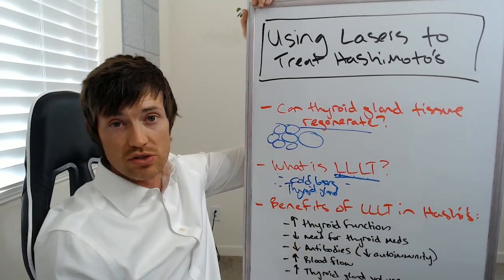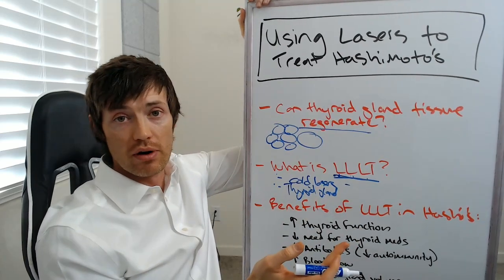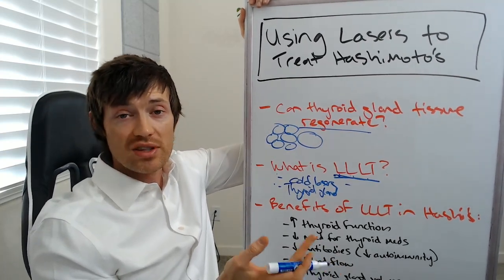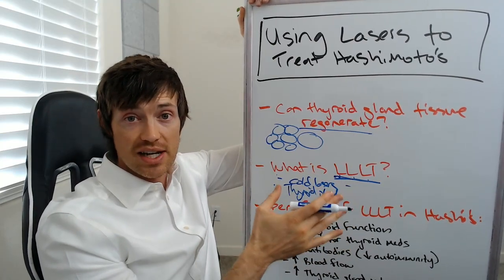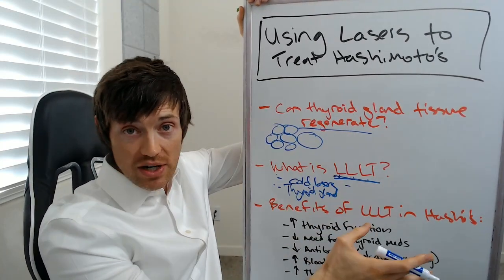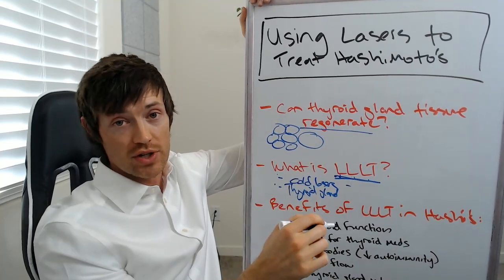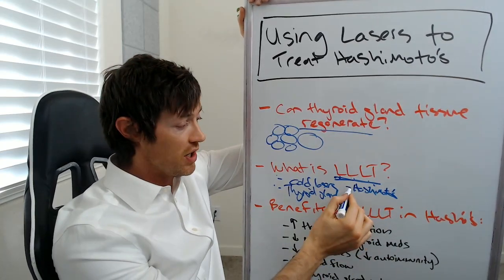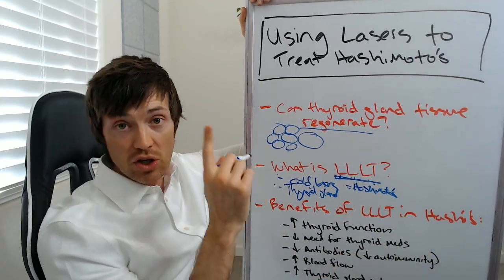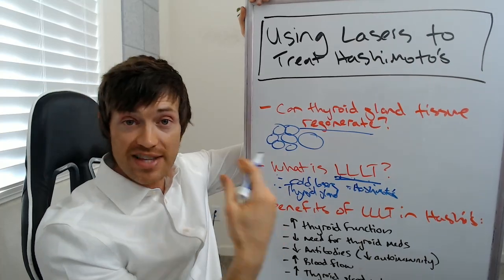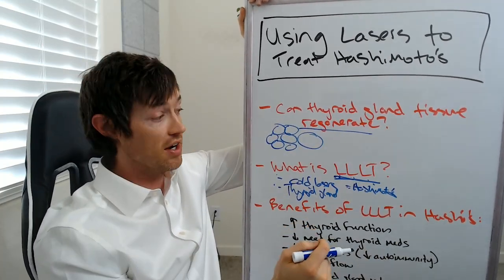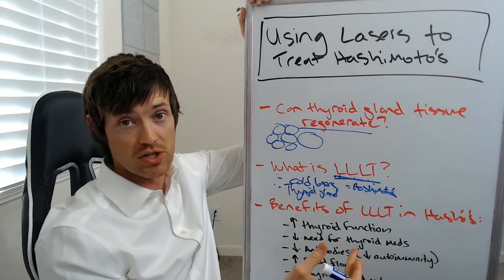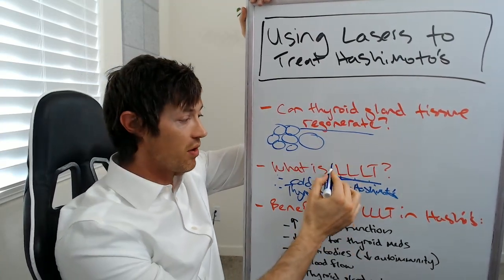Now, why don't doctors know about this? The reason is simple: doctors really don't consider Hashimoto's thyroiditis by itself a condition that needs to be treated. They consider hypothyroidism — which is a result of Hashimoto's — the thing that needs to be treated. So they have no problem letting Hashimoto's get so bad that it destroys your thyroid gland, because they're not worried about the autoimmune component. Hopefully you, as a savvy thyroid patient, know it's better to prevent the destruction of your thyroid gland through these therapies, because you don't want to be reliant on thyroid medication for the rest of your life.